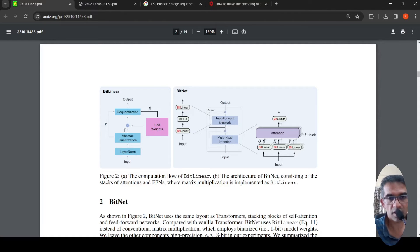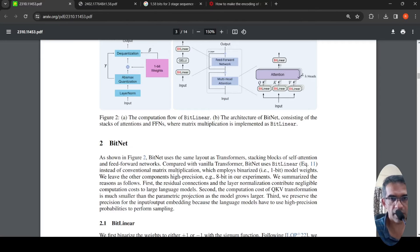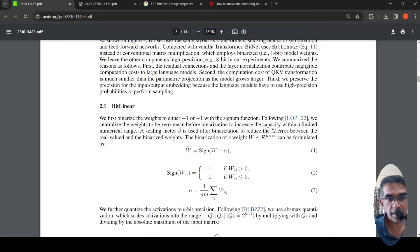So it's a network layer. And there is a particular way of, instead of conventional matrix multiplication, this particular bit linear layer employs binarized one bit model weights. That is the idea over here. But the other components like activations are left at eight bits. So details are present over here of how they are binarizing the weights to a plus or minus one.